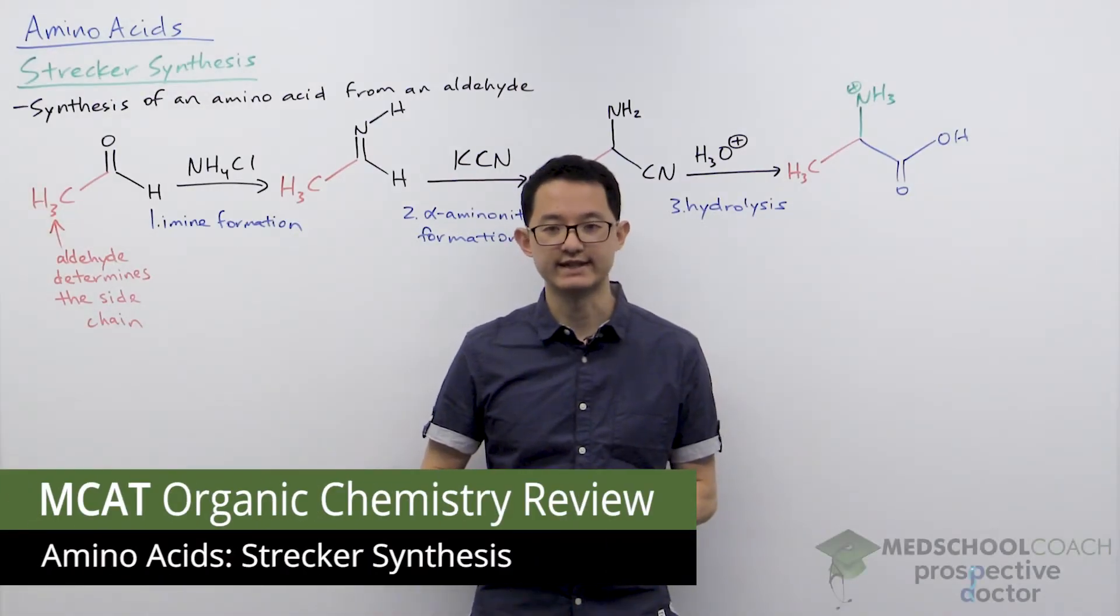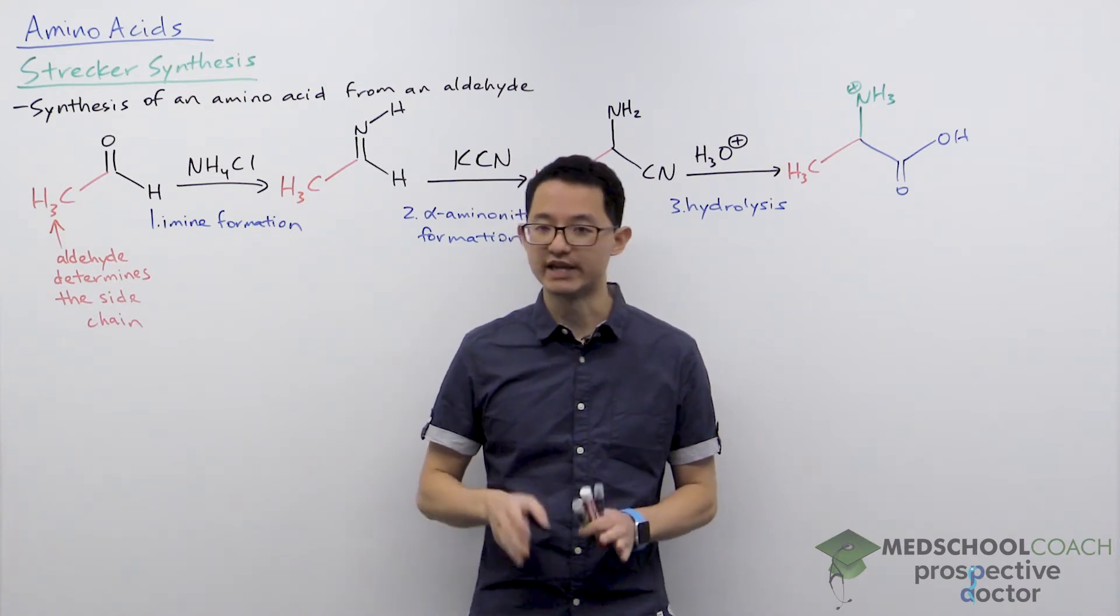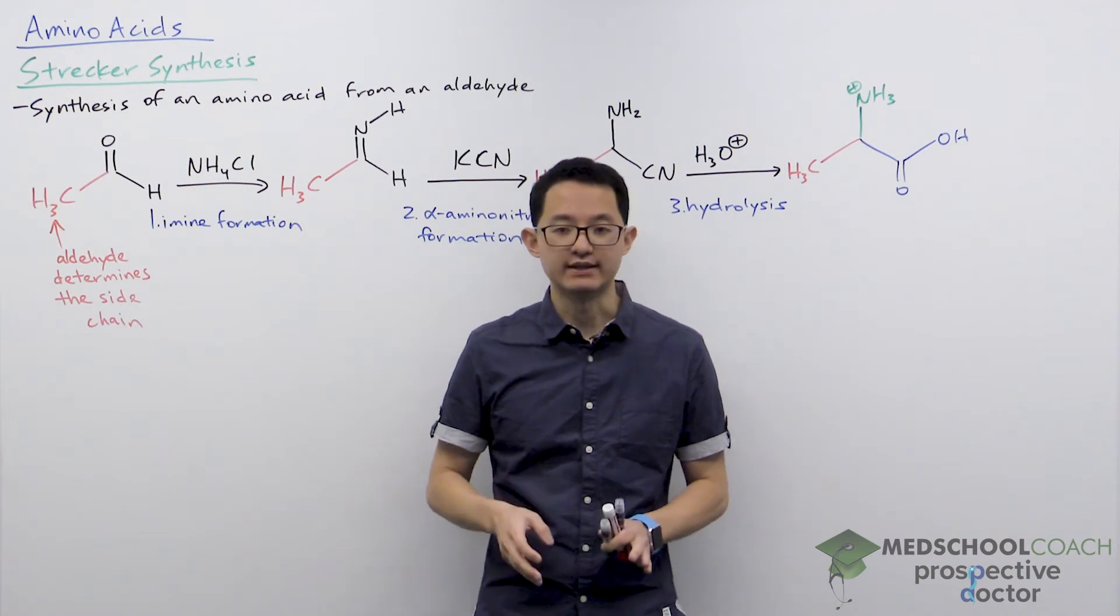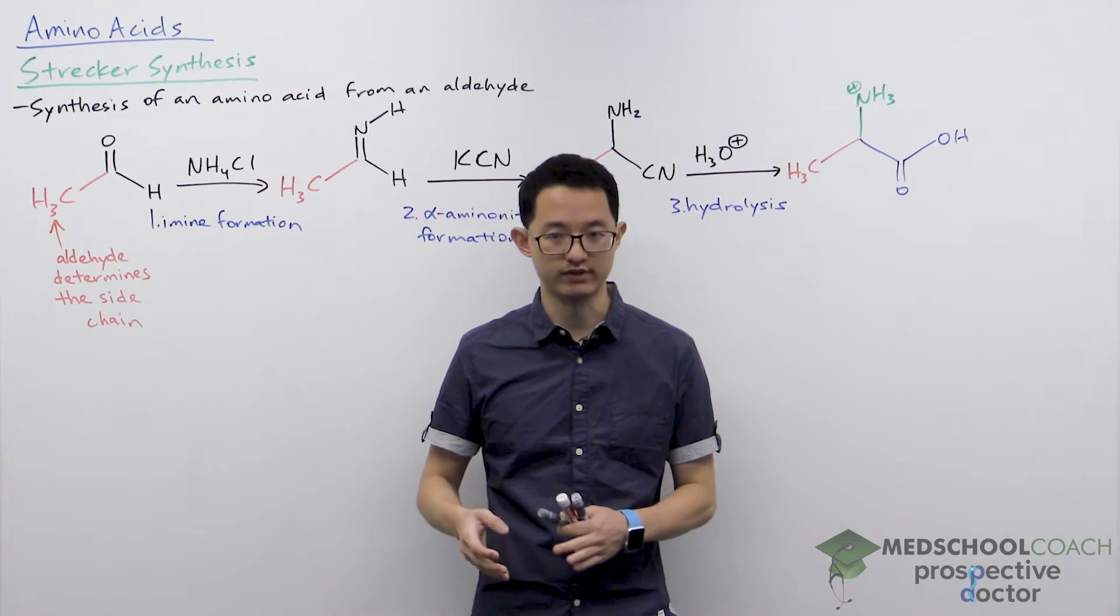In this video we're going to discuss the Strecker synthesis. The Strecker synthesis is one of two different ways of making amino acids that you need to know for the MCAT. The other method is the Gabriel synthesis, which we're going to discuss in the next video.